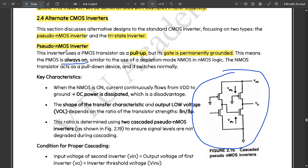This means that the PMOS is always in on state, similar to the use of depletion mode in nMOS. In nMOS logic, the nMOS transistor acts as pull-down device and it switches normally. Normally means it would be either zero or one based on the transistor switch condition, whether it is on or off. But for PMOS it is permanently grounded, so it is always on.